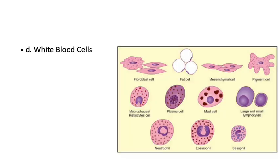White blood cells include lymphocytes, neutrophils, eosinophils, and basophils. Their function is to carry antibodies and phagocytose bacteria. The nucleus of neutrophils has 3 to 5 lobes. Eosinophils are associated with allergic reactions, and basophils are responsible for anaphylaxis.